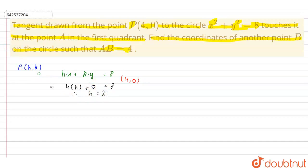Now, A also lies on the circle. Therefore, it also must satisfy the equation of the circle. So, we get h² plus k² is equal to 8. Now, we know that h is equal to 2. Therefore, we get k² is equal to 4. Therefore, k is equal to plus minus 2.